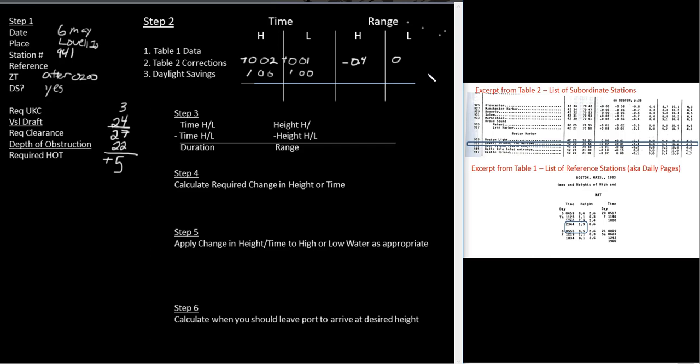So what am I going to do now? Well, I've got to go now to my reference station, table one. It looks like here it's on Boston, which is on page 36. So I'm just going to go ahead and put Boston here. And that's page 36. So now I'm going to go to page 36. When you go to page 36, you're going to look for 6 May, and you're going to get this. So this actually is the excerpt from page, whatever page it is, table one, and for Boston on May 6th.